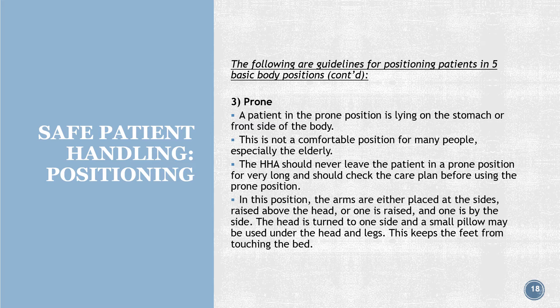Position 3 — Prone: a patient in the prone position is lying on the stomach or front side of the body. This is not a comfortable position for many people, especially the elderly. The HHA should never leave the patient in a prone position for very long and should check the care plan before using it. In this position, the arms are placed at the sides, raised above the head, or one is raised and one is by the side. The head is turned to one side, and a small pillow may be used under the head and legs to keep the feet from touching the bed.